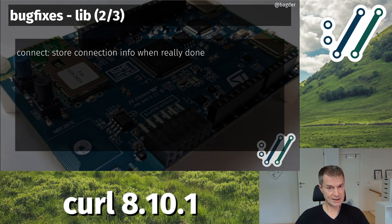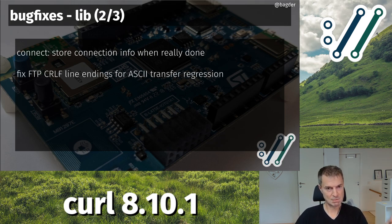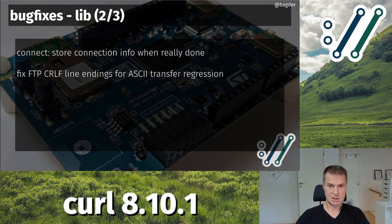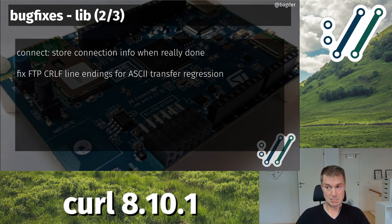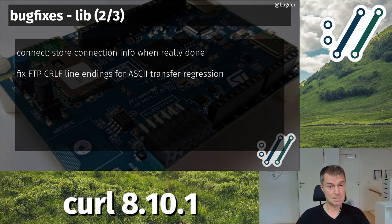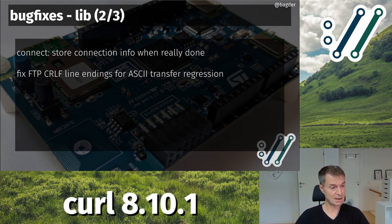In the library, we fixed an issue where we sometimes didn't store the connection info correctly due to happy eyeballs interactions. We also introduced a regression related to CRLF line endings in FTP — when doing a directory listing over FTP, curl would suddenly no longer properly convert CRLF to just LF on systems that don't normally have CRLF line endings, like everything except Windows. That should be back to correct now.